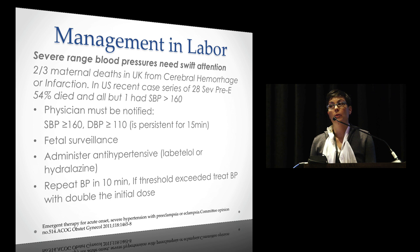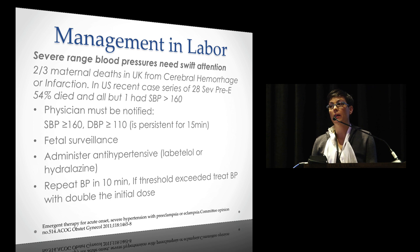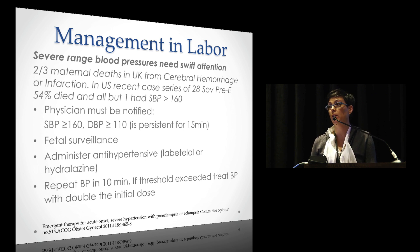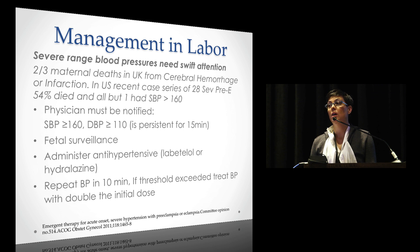Severe range blood pressures need swift attention — ACOG was very particular about this and gave strict criteria. Two-thirds of maternal deaths in the UK were from cerebral hemorrhage or infarction. In the US, a case series of 28 women with severe preeclampsia showed 54 percent died, and all but one had a blood pressure greater than 160. The guidelines recommend fetal surveillance, and when you hit those cutoffs, administer an antihypertensive — labetalol or hydralazine — repeating in 10 minutes if you continue to meet the threshold.